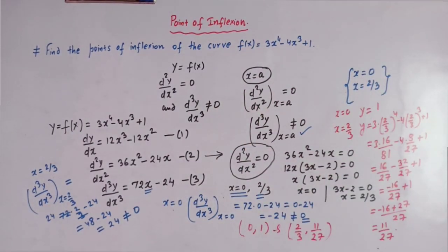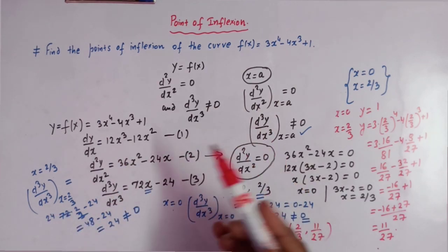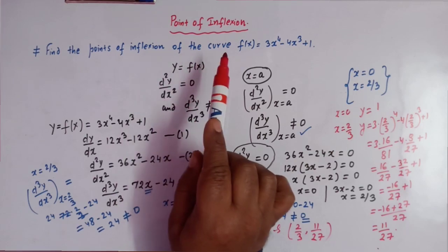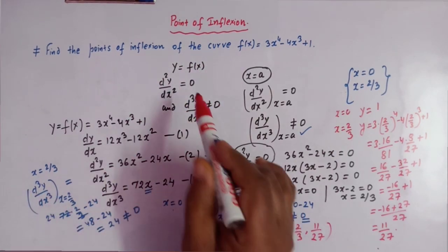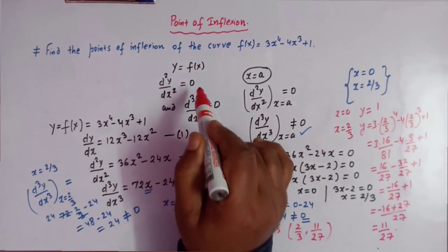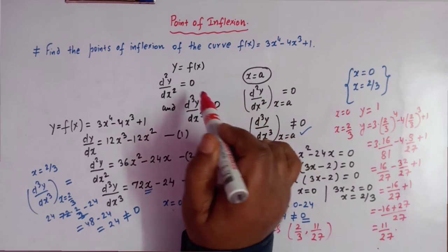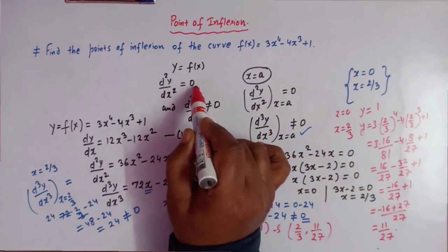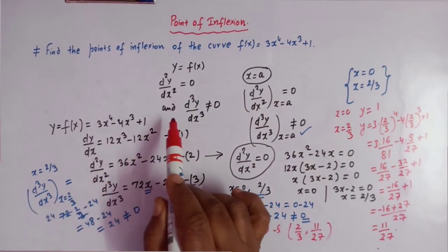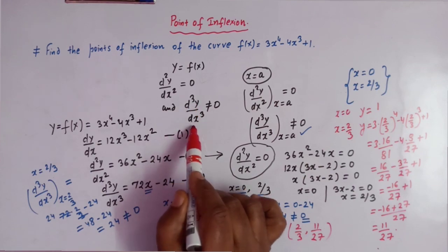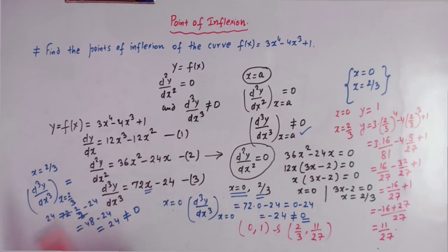This is how we can calculate the points of inflection for a given curve. To summarize, for a point of inflection to exist, the necessary condition is that the second derivative must be equal to zero, but the third derivative should not be equal to zero.